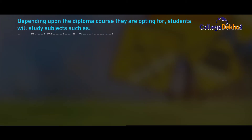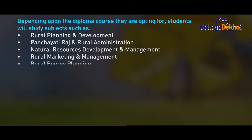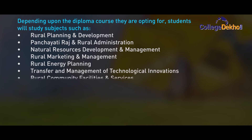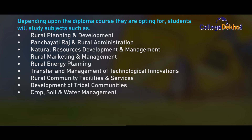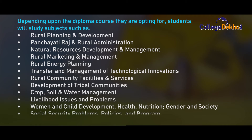Depending upon the diploma course they are opting for, students will study subjects such as: rural planning and development, Panchayati Raj and rural administration, natural resources development and management, rural marketing and management, rural energy planning, transfer and management of technological innovations, rural community facilities and services, development of tribal communities, crop and soil and water management, livelihood issues and problems, women and child development, health, nutrition, gender and society, social security problems, policy and program, networking and communication.